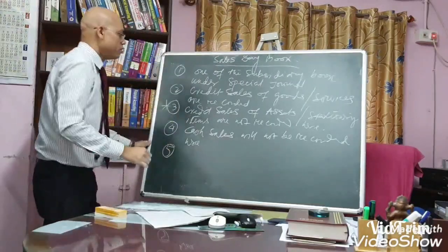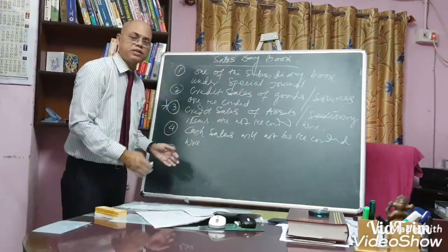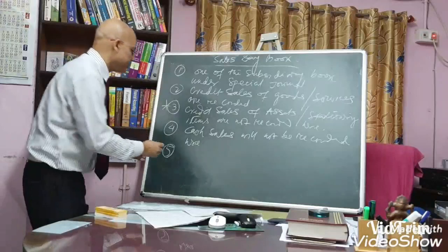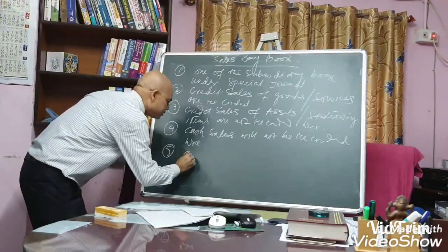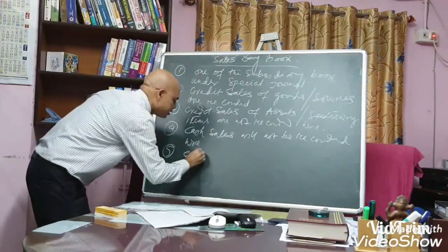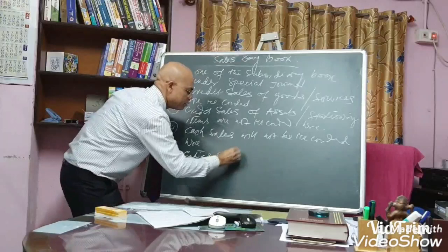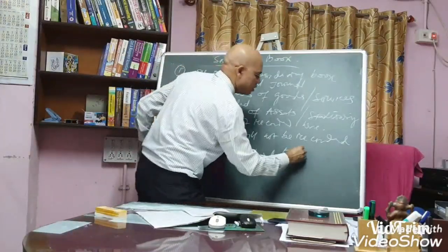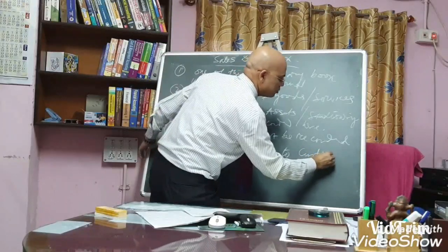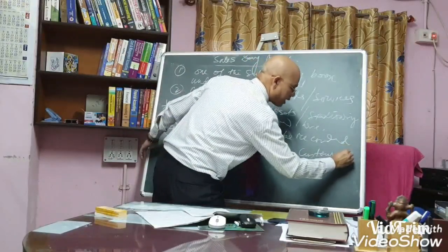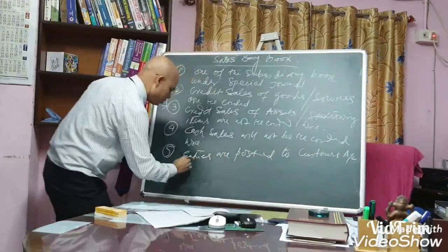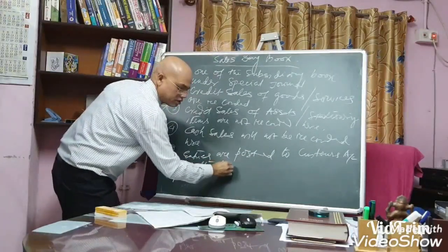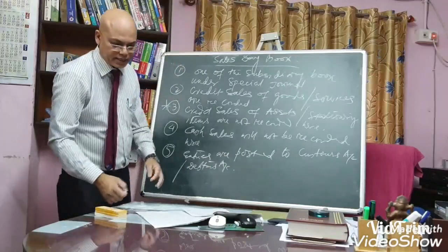Number five: it is a part of the journal, or books of primary entry. From here, the entries are posted to the customers account, or you can say debtors account.